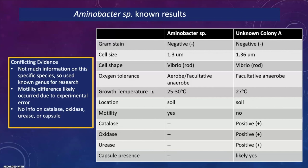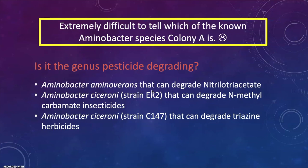In conclusion, it is extremely difficult to tell which known Aminobacter species colony A is, as there wasn't much research available — that's just how science works sometimes. The question is whether the genus itself is pesticide degrading, and I did find information that a couple of species degrade pesticides such as nitrilotriacetate, methylcarbamate insecticides, and triazine herbicides. Thank you for your time.